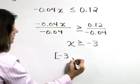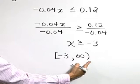So in interval notation, we'll start back here at negative 3, run up in the direction of positive infinity.